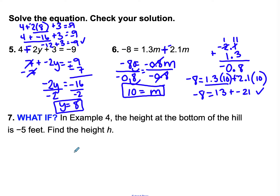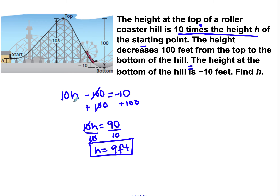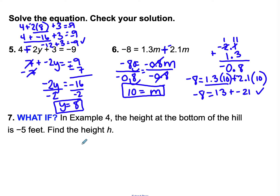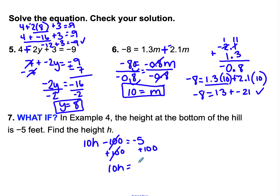Last one: an example where the height at the bottom of the hill is negative 5 feet — find the height h. My equation is 10h minus 100 equals negative 5. I add positive 100 to both sides: those equal 0, leaving 10h. Negative 5 plus positive 100 is 95. I divide both sides by 10 to cancel the multiplication: 95 divided by 10 is 9.5. So the height h is 9 and a half feet.